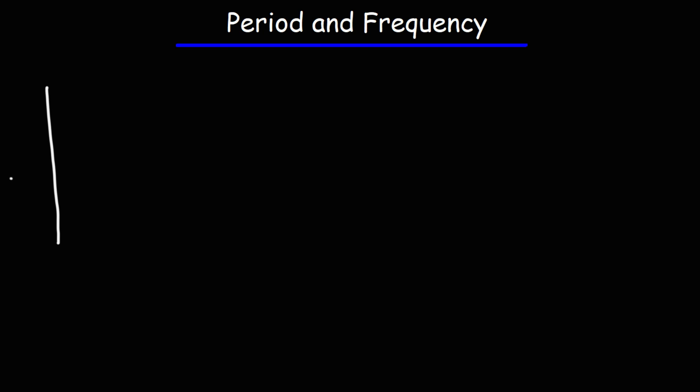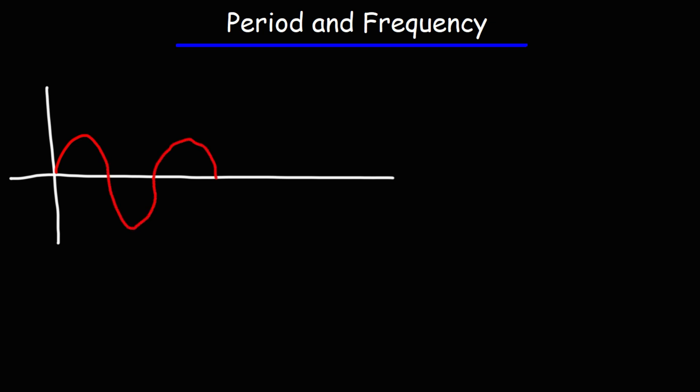In this video we're going to talk about things associated with waves like the period, the frequency, the amplitude, and the wavelength. Let's say you have a graph with a wave on it. This is one cycle of the wave, this is two cycles, three cycles, and so forth.